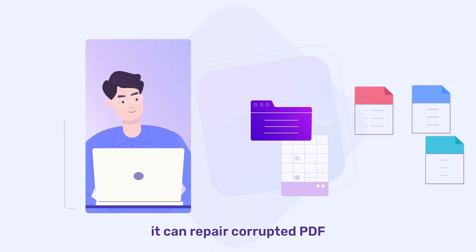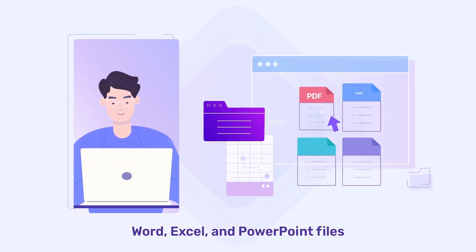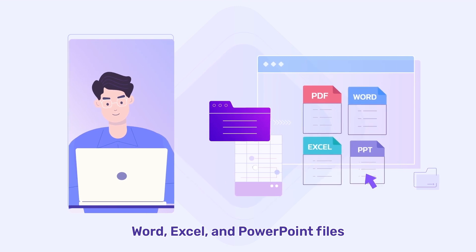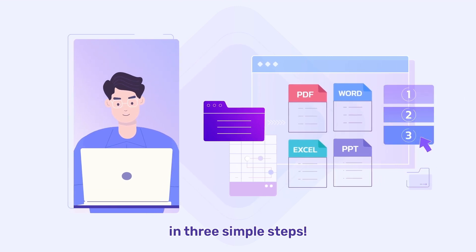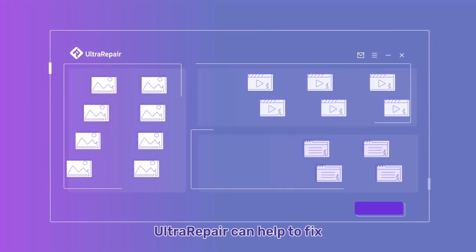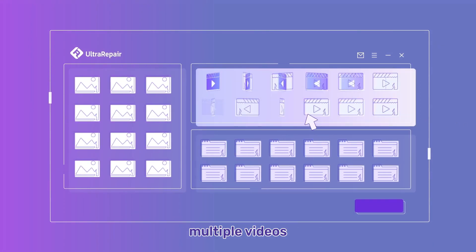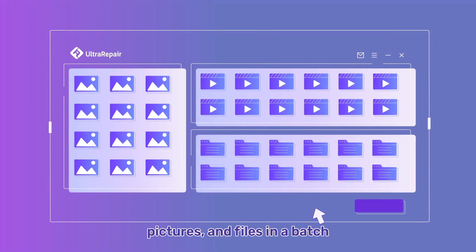As for file repair, it can repair corrupted PDF, Word, Excel, and PowerPoint files in three simple steps. In addition, Ultra Repair can help to fix multiple videos, pictures, and files in a batch.